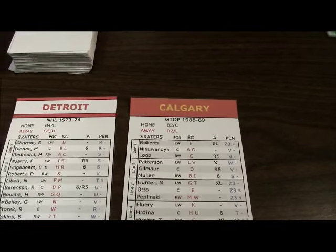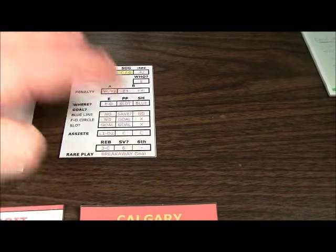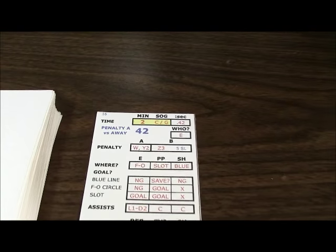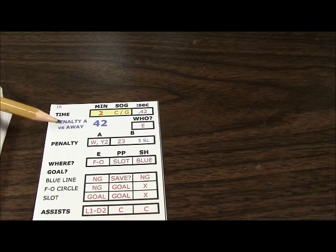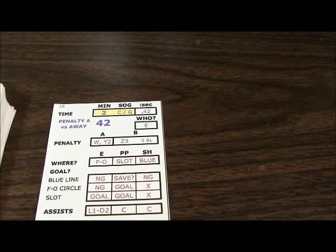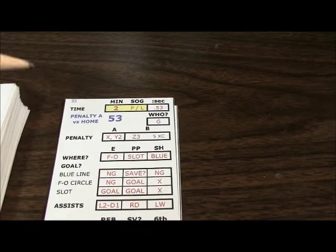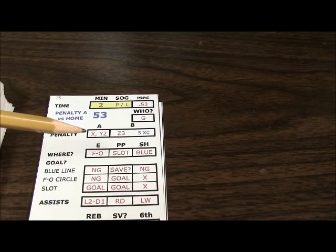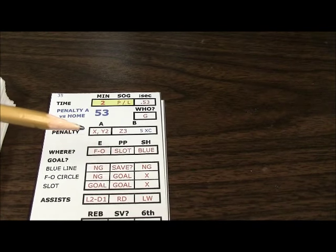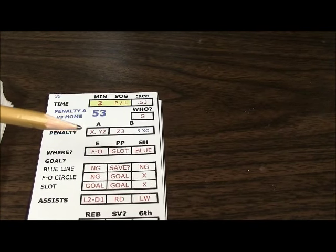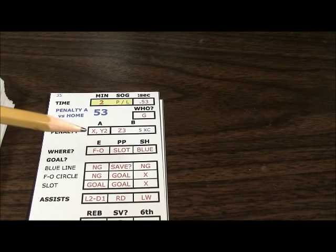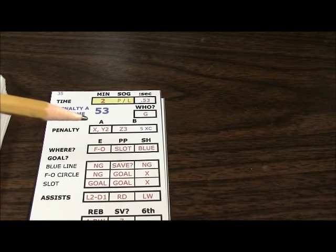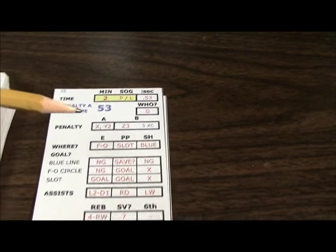For example, we'll draw an action card and demonstrate a penalty A, which is a minor penalty. When you get this reading on the action card — penalty A versus the away team — flip another card and refer to the two letter grades in the penalty A box on the action card. Penalty A will always have two letter ratings, and you're going to check every player on the roster that has these ratings — they will get a minor penalty.